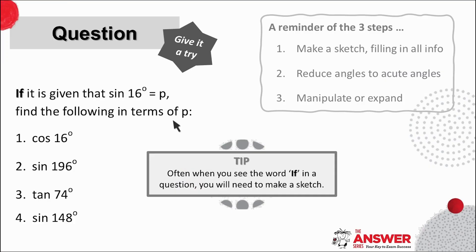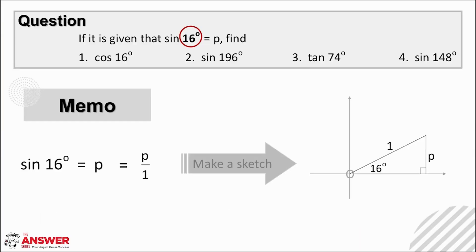So here is the question again. Pause the video for a moment now to give yourself a chance to work through it. Okay so step one is to make a sketch and this means placing the acute angle in this case of 16 degrees in standard position and then completing the triangle. If it is given that sin 16° = p then you can say it equals the ratio of p over 1 and we can then place this ratio in our sketch as opposite over hypotenuse or y over r.